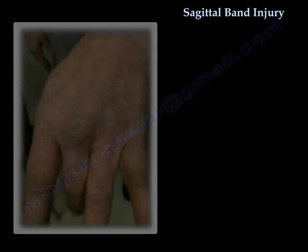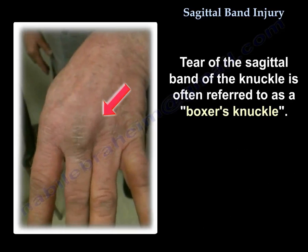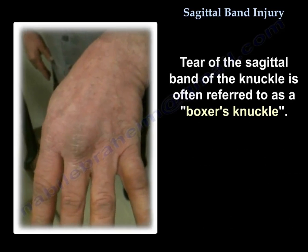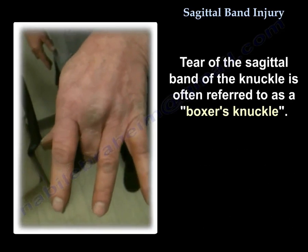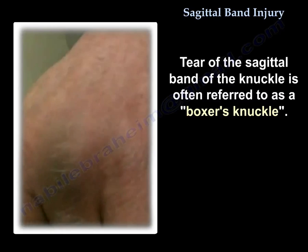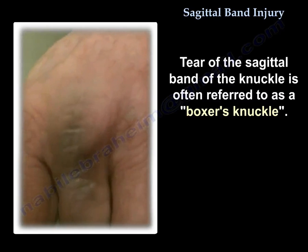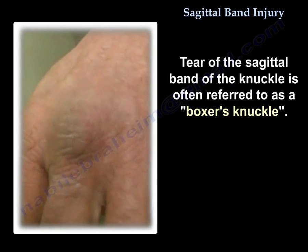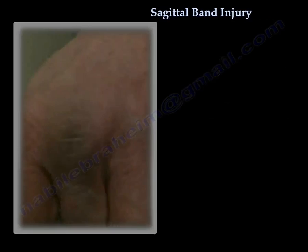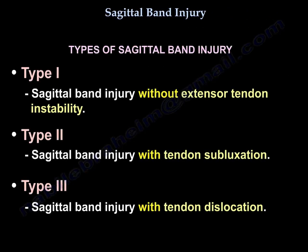Tear of the sagittal band of the knuckle is often referred to as boxer's knuckle. There are really three types of this injury: Type 1 without extensor tendon instability, Type 2 with tendon subluxation, and Type 3 with tendon dislocation.